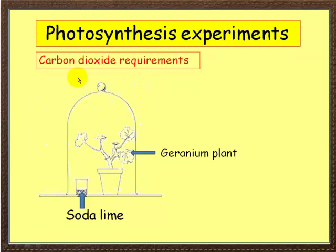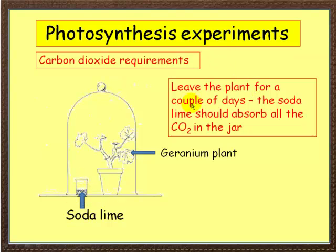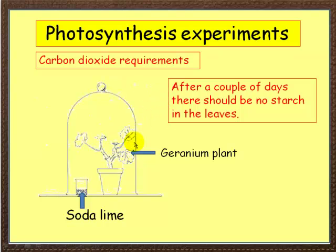The third experiment shows how plants require carbon dioxide. We put a geranium plant inside a bell jar with sodalime. Sodalime absorbs carbon dioxide. Leave the plant for a couple of days — the sodalime should absorb all the CO₂ in the jar. If all the CO₂ is being absorbed, photosynthesis cannot occur in the plant leaves. We can show that photosynthesis has stopped by testing the leaves for starch: after a couple of days, the plant has not produced any more starch — in fact, it's used it all up. Using the iodine test on the plant leaves, you can show there's no starch present, because no photosynthesis has occurred, because there was no carbon dioxide.